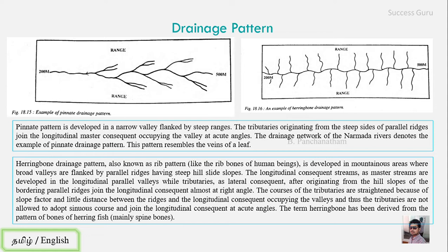The last pattern is the herringbone drainage pattern, also known as the rib pattern. It is developed in a mountain area where broad valleys are flanked by parallel ridges having steep hillside slopes. The longitudinal consequent or master stream is developed in a longitudinal parallel valley, while the tributaries as lateral consequents, originating from the hillslopes of the bordering parallel ridges, join the longitudinal consequent almost at right angles. The term herringbone is derived from the pattern of the bones of a herring fish — mainly the spine bone.